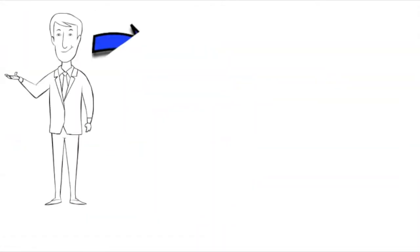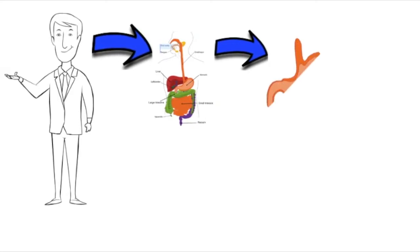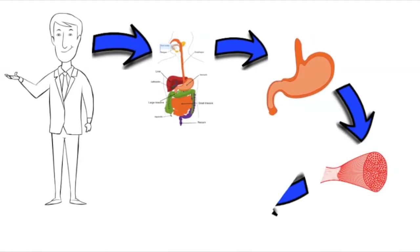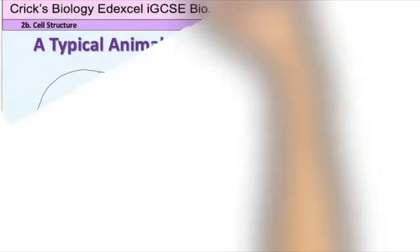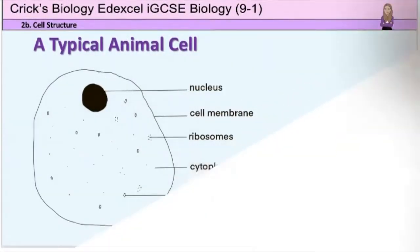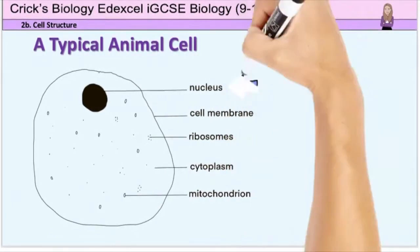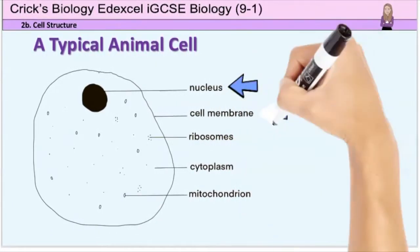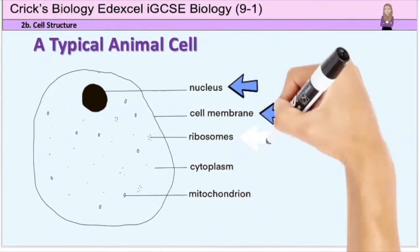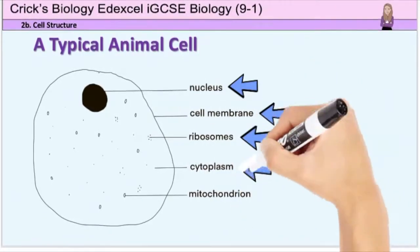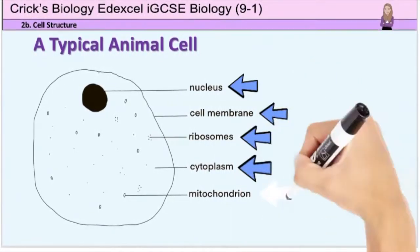So let's break it back down into the individual cells. We need to look at the structure of typical plant and animal cells before we can go on to look at the more specialised cells. This is a diagram of a typical animal cell. As you can see, it has five main components: a nucleus, cell membrane, ribosomes, a cytoplasm, and mitochondrion.